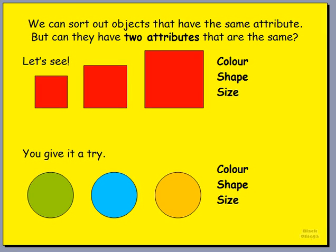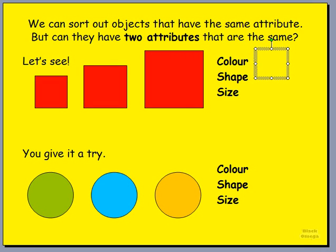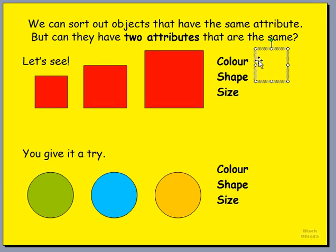First example here, what do we see in front of us? That's right, we have a red square. And the next shape? It's also a red square — a little bigger, but it's also a red square. And what is our last shape? That's right, it's a red square — the biggest of the three, but it is a red square. Now let's have a look at the attributes, what things are the same and what things are different about these three shapes.